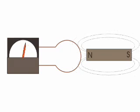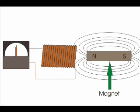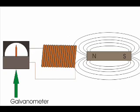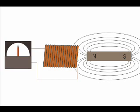In this experiment, Faraday takes a magnet and a coil and connects a galvanometer across the coil. At the start, the magnet is at rest, so there is no deflection in the galvanometer — that is, the needle of the galvanometer is at the center or zero position.